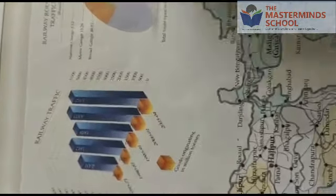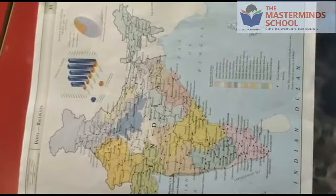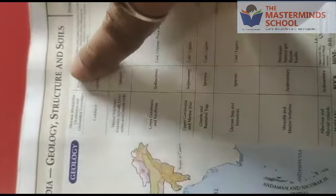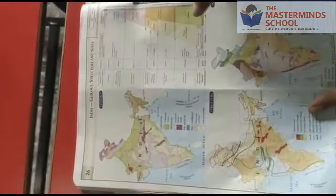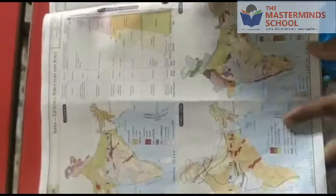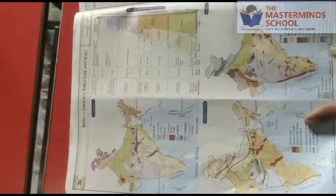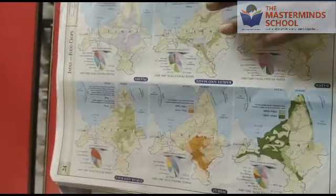This is one more type of map — geology, structure, and soils. From this map we can know what types of soils are here and what types of soils are good for wheat crops, so we can know everything about the soil and structures. The type of soil determines the food crops grown.